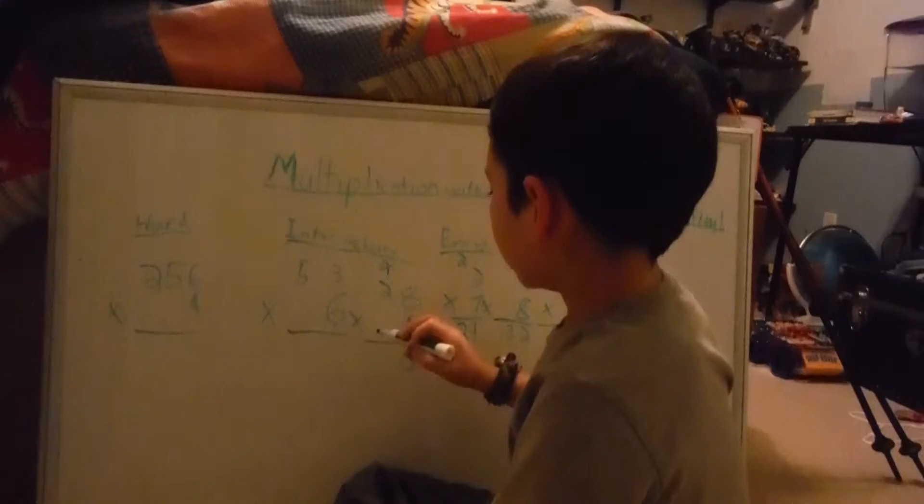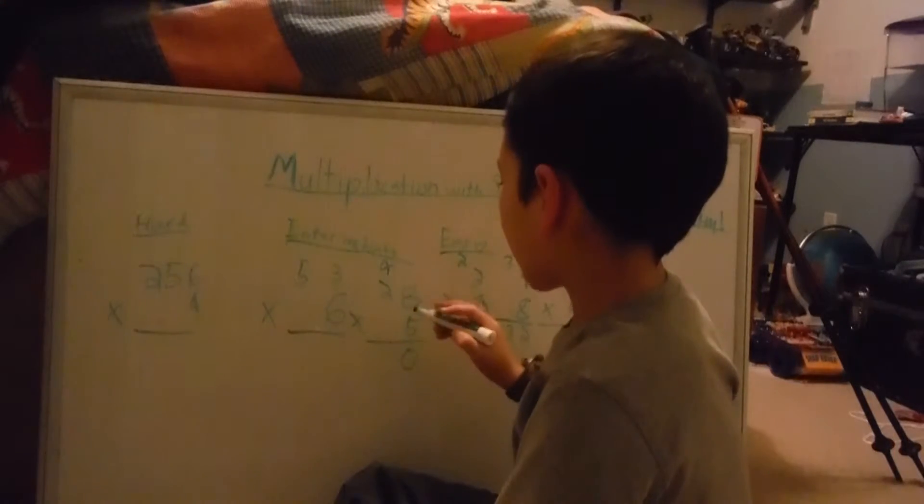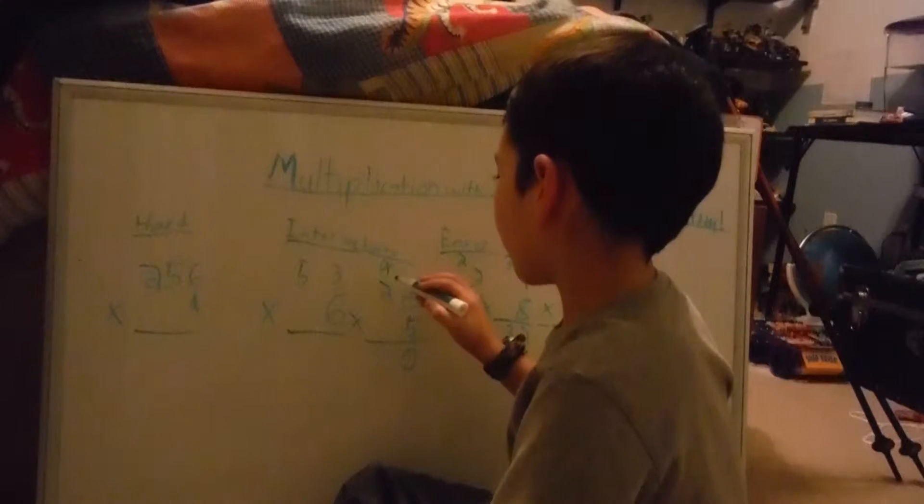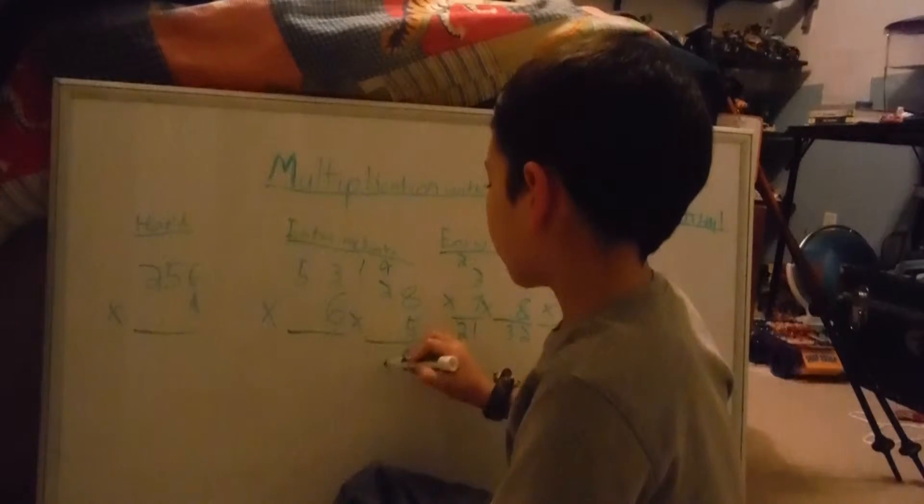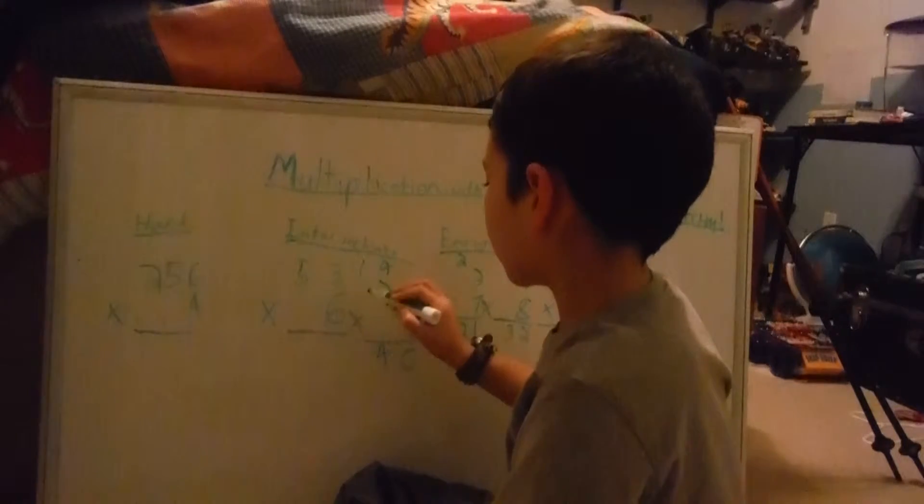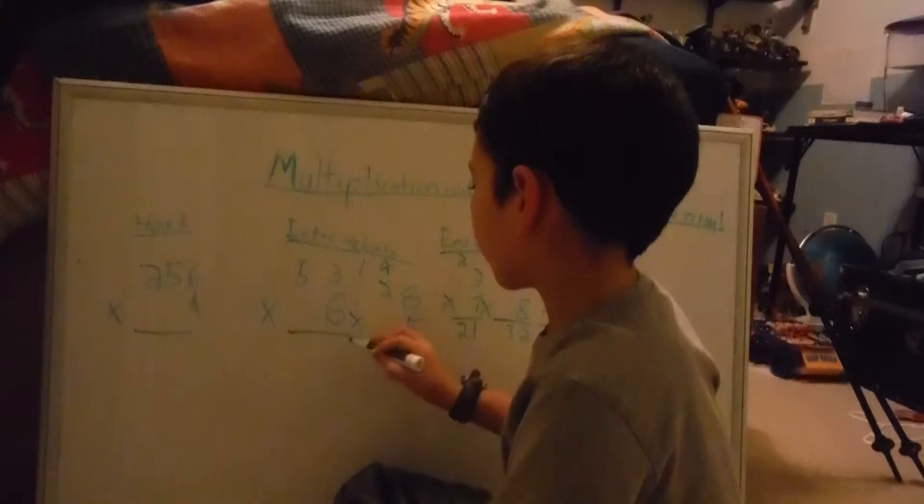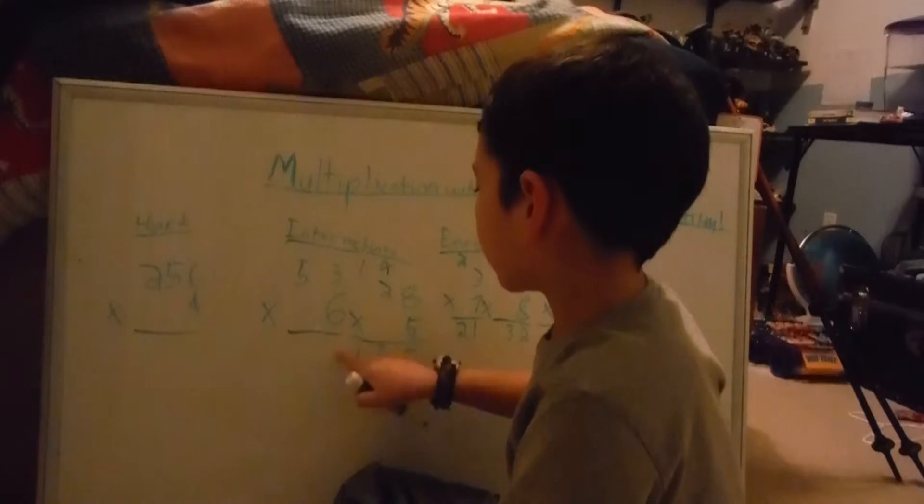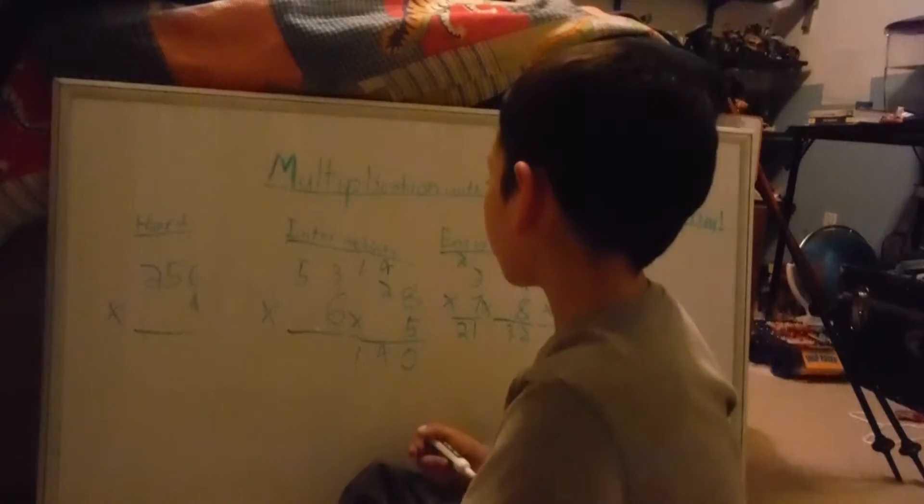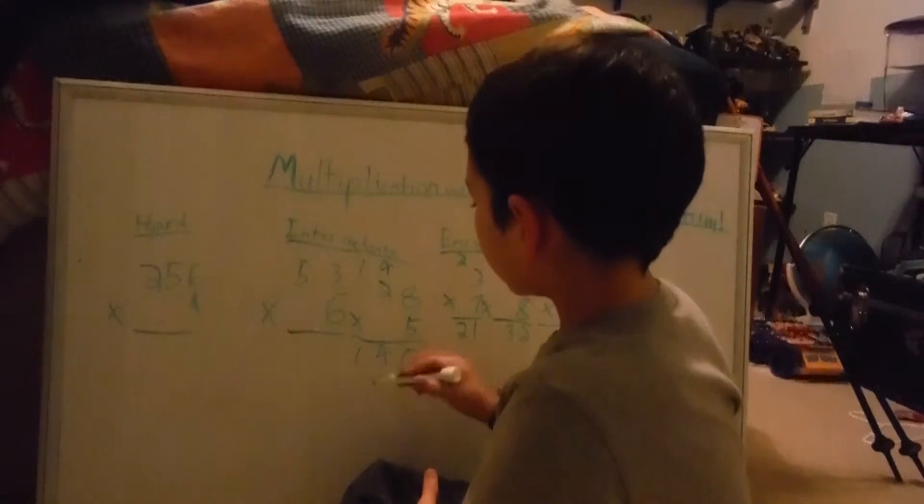And then you do 2 times 5. That's 10, and then we have to add this leftover 4 so 1, 4 and then there's nothing to add in the hundreds place so you add a 1 down there. That's 140.